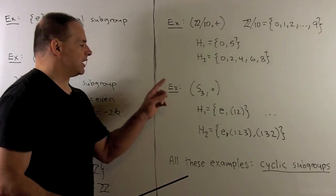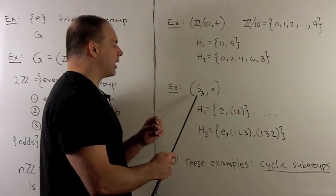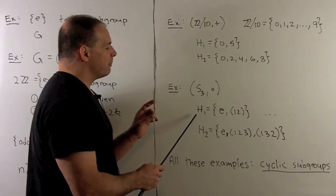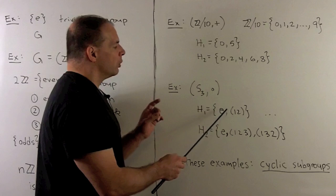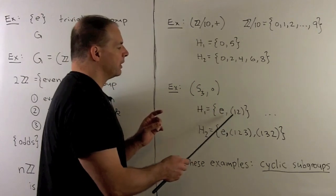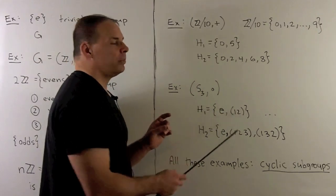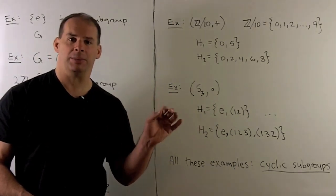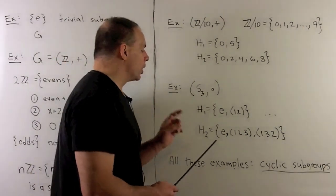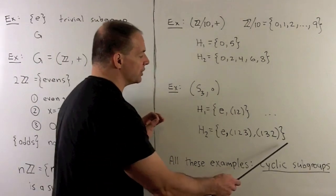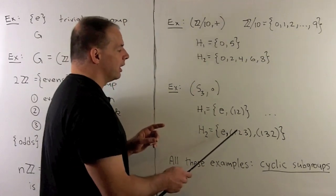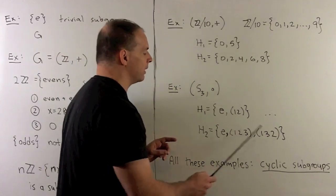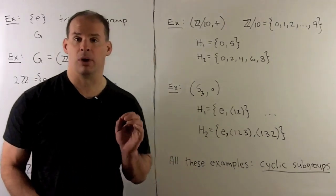Finally, in the symmetric group on three letters — the symmetries of an equilateral triangle — we have subgroups given by taking the identity with any of the reflections. For example, {e, (1 2)}: multiplying (1 2) by itself gives the identity, so it's closed under multiplication and non-empty, hence a subgroup. We also have a subgroup formed by the rotations: multiplying a rotation by itself gives another rotation, and the product of two rotations gives the identity, so this is closed under multiplication and is a subgroup.